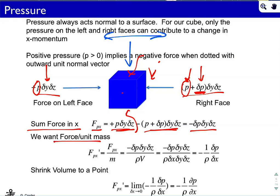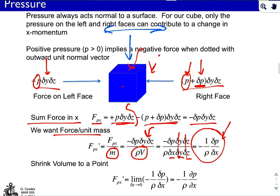We want force per unit mass, so we divide by rho*V. The volume of the cube is delta_x * delta_y * delta_z. The area delta_y*delta_z appears in both numerator and denominator and cancels, leaving minus (1/rho) * delta_p / delta_x. This is what we call the pressure gradient. Pressure can lead to a force proportional to the pressure gradient. If the pressure is not changing at all — delta p over delta x is zero — there is no force due to pressure.